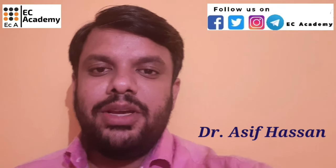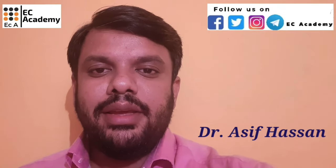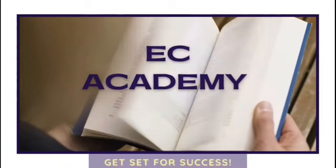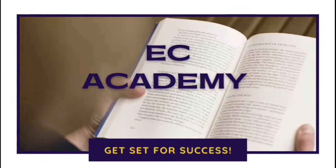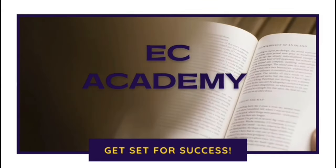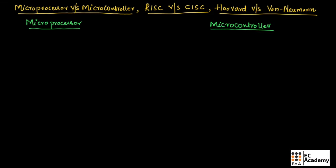Hello friends, welcome to ESA Academy. In this lecture, let us understand microprocessor and microcontroller, RISC and CISC, and Harvard and Von Neumann architecture. First, let us understand the difference between microprocessor and a microcontroller.